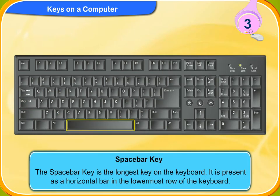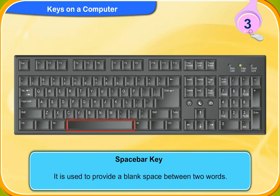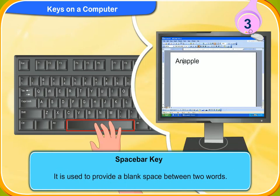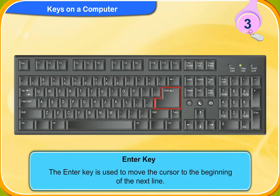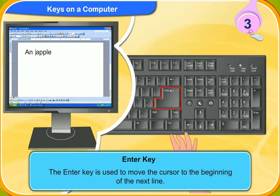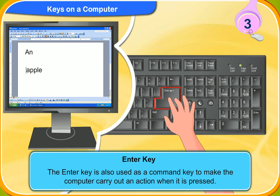The space bar key is the longest key on the keyboard. It is present as a horizontal bar in the lowermost row of the keyboard. It is used to provide a blank space between two words. The enter key is used to move the cursor to the beginning of the next line. The enter key is also used as a command key to make the computer carry out an action when it is pressed.